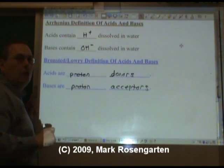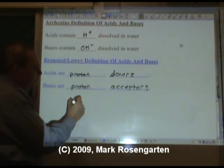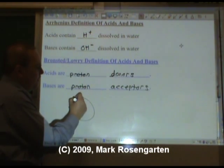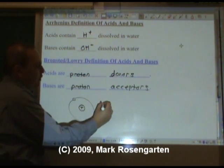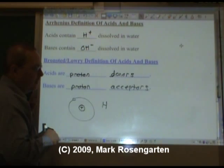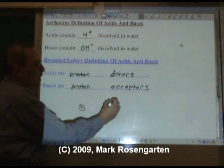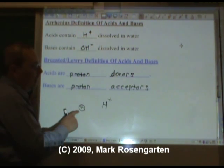Now let's talk about this whole proton business. This is a proton. If you throw an electron around it, you're talking about hydrogen. A hydrogen atom is made up of a proton with an electron zipping around outside of it. However, when hydrogen loses its one and only valence electron, it becomes a hydrogen ion, a proton.